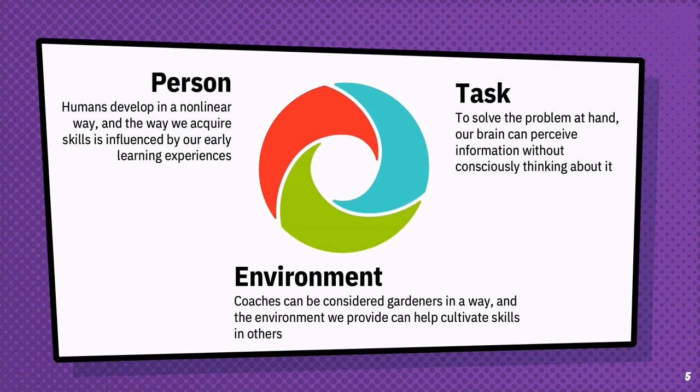Ecological dynamics is where ecological psychology and dynamic systems theory meet, and Rob Gray's talk in this series is a great place to start if you want to know more about these theories. Here I'm talking about the relatable parts — the things we can observe and consider as coaches. There is one simple instruction that underlines this theory: that the person, their task, and their environment are constantly interacting.